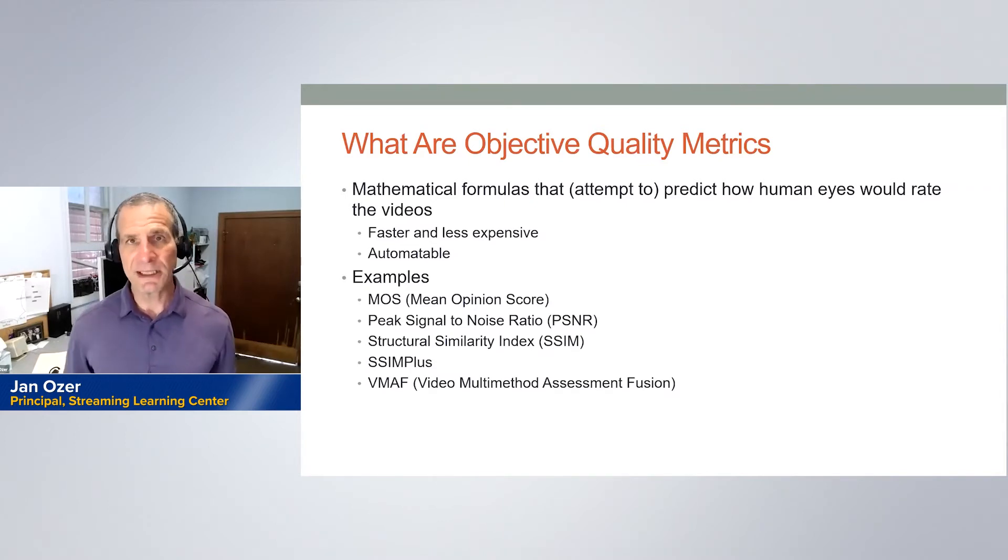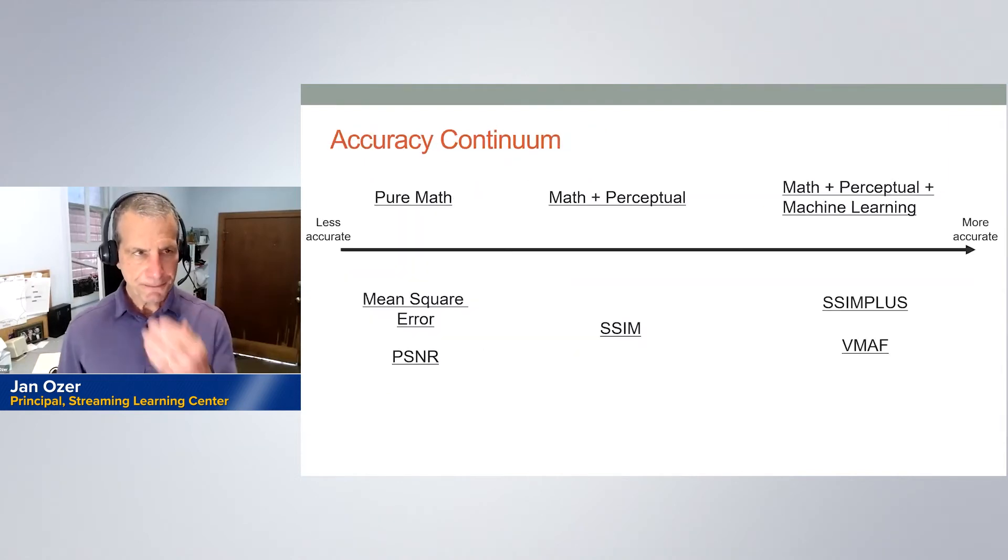VMAF is the metric invented by Netflix. I wanted to point out that over time these metrics have become more accurate because they've incorporated a couple of things. Number one, the initial metrics were just math. They measured the difference between the compressed video and the source video and came up with a measure of that difference.